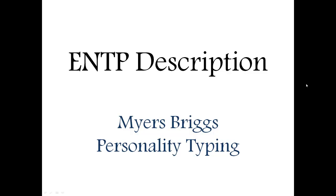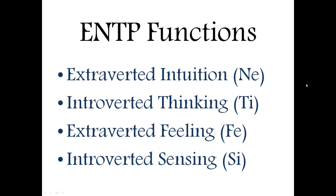Hi, this is Scott and in this video I'm going to be talking about the ENTP description according to Myers-Briggs personality typing. To understand the ENTP, you first need to know their four main functions. Their first function is extroverted intuition, or NE, and basically this is how they perceive the world. They take in multiple different possibilities, are very objective about how they view things, and like to see stuff from everyone's point of view, which helps them see the big picture and make connections that other people might not comprehend as quickly.